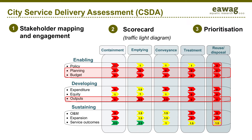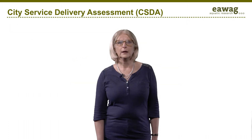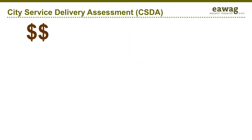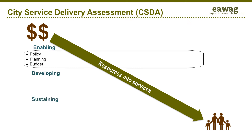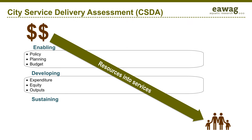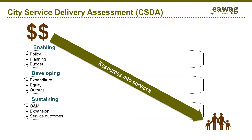Once priorities have been agreed, detailed reports can be more focused and more meaningful. The CSDA shows how finance is converted into effective sanitation services for people. It considers three pillars: enabling, developing, and sustaining services. The enabling pillar assesses the quality of the enabling environment. The developing pillar assesses the extent of sanitation development. And the sustaining pillar assesses the commitment to sustaining services.